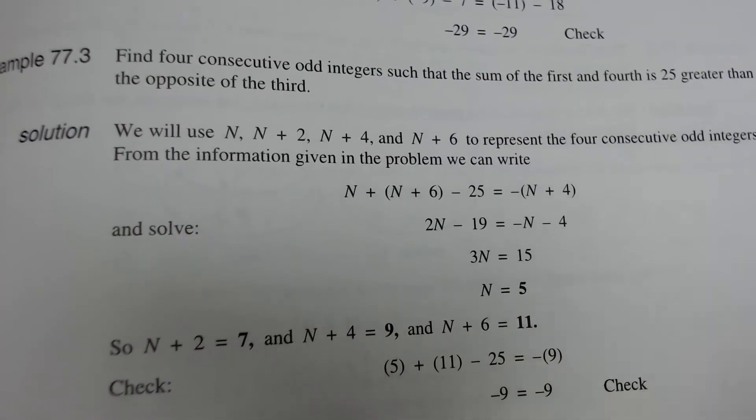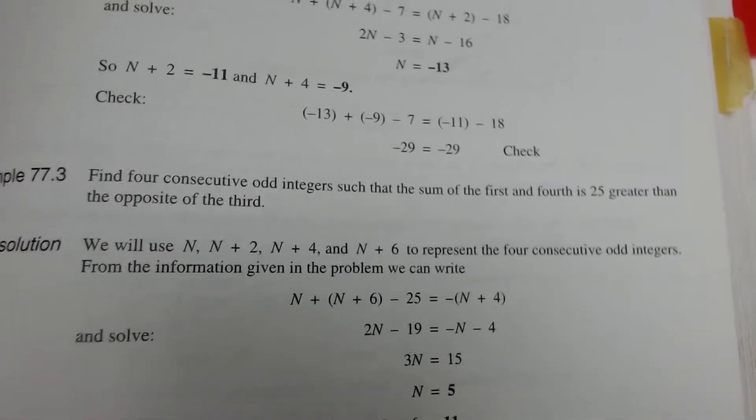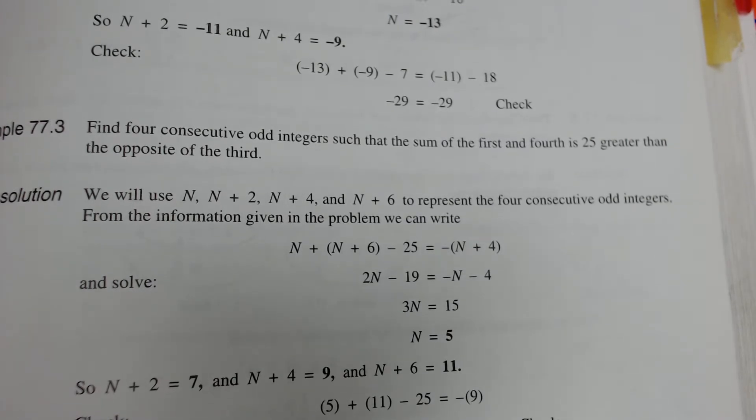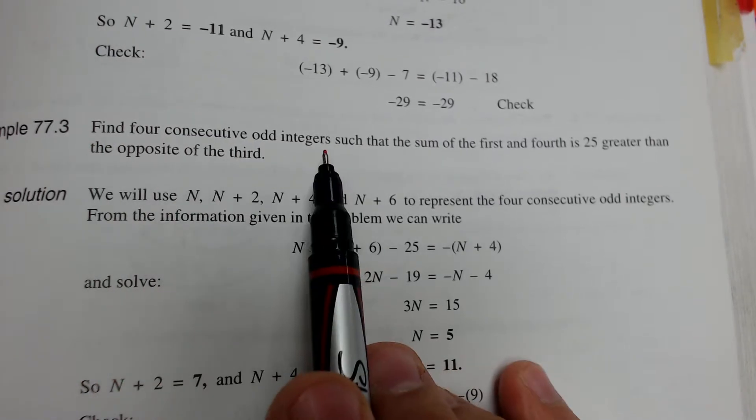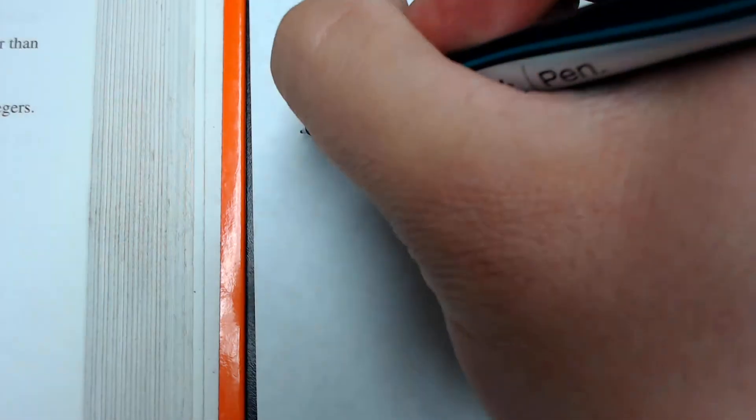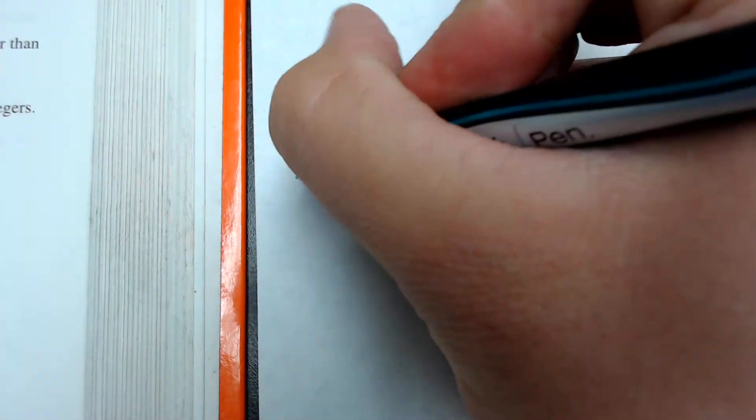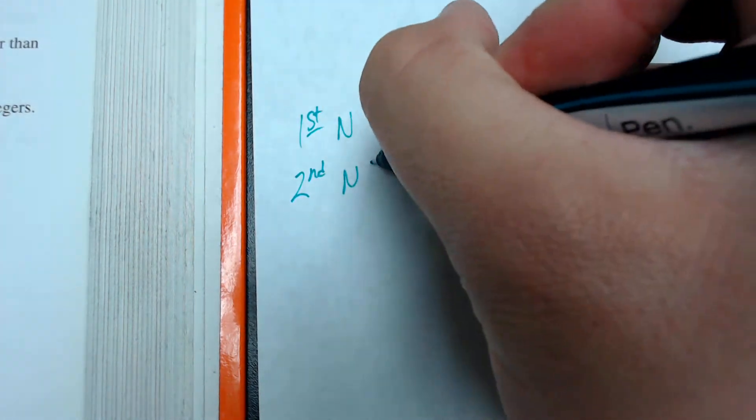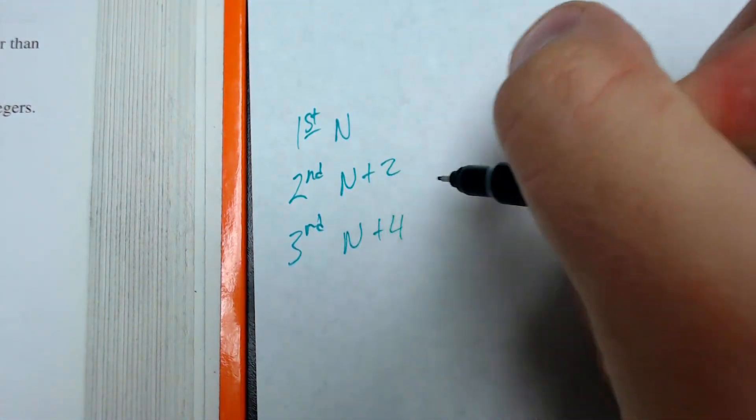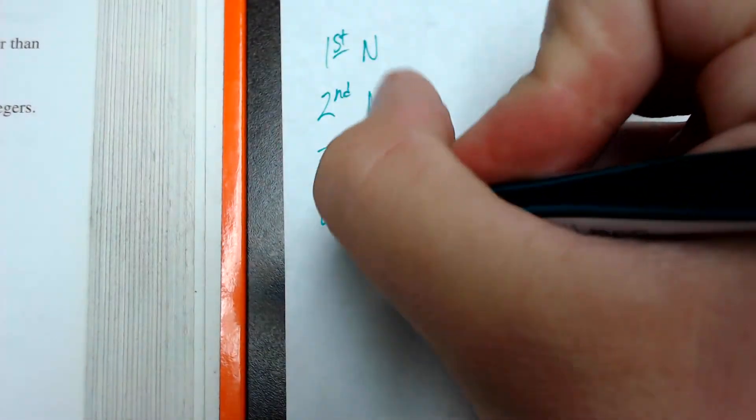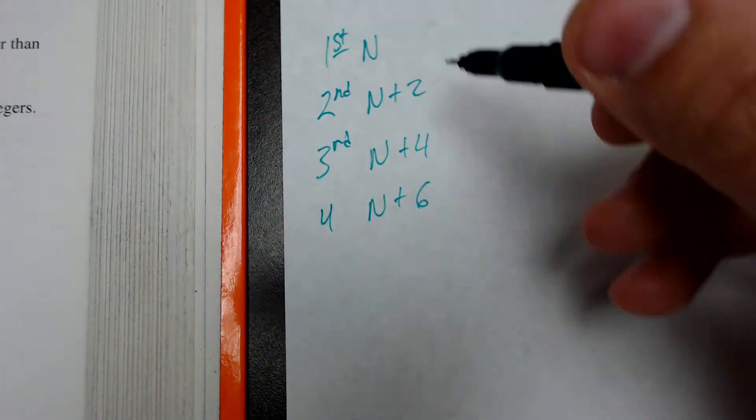So, we'll do a quick example. 77.3. They tell me to find four consecutive odd integers, such that the sum of the first and the fourth is 25 greater than the opposite of the third. So, the first thing I'm going to do, I'm going to write my four odd integers as unknowns. The first is going to be n. The second is going to be n plus 2. The third is going to be n plus 4, not 3. And the fourth is going to be n plus 6.